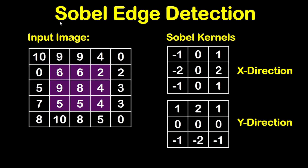In this tutorial, we are going to show a solved example on Sobel edge detection using an input image and the Sobel kernels — the kernel of the x direction and the kernel of the y direction — and we will apply the algorithm on a highlighted region of the image.